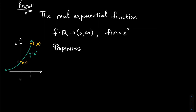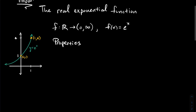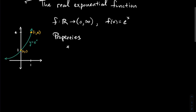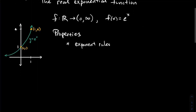Let's collect a lot more properties of the real exponential function. The first property is that we've got a whole bunch of exponent rules — for example, e to the x1 plus x2 equals e to the x1 times e to the x2, and there are a bunch more you probably remember.